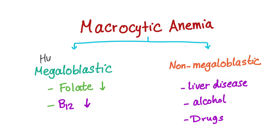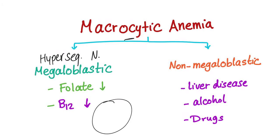Megaloblastic anemia usually presents with hypersegmented neutrophils. Think about a megaloblastic process in a patient with macrocytic anemia and also maybe pancytopenia and indirect hyperbilirubinemia. Because, as we have discussed, there is intramedullary hemolysis, because these macrocytes or macro-ovalocytes are abnormal and get phagocytosed by macrophages.